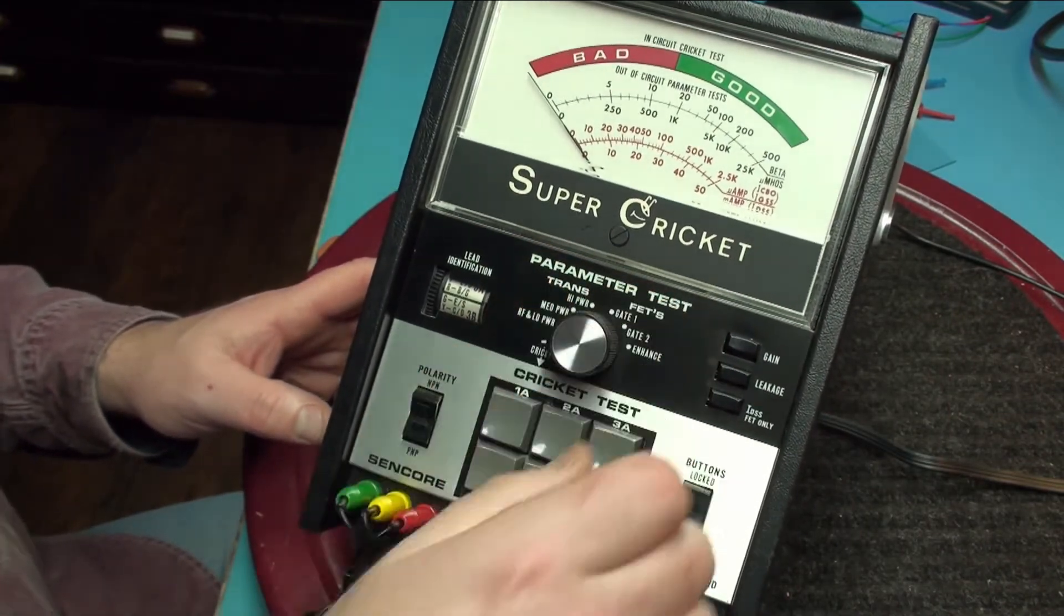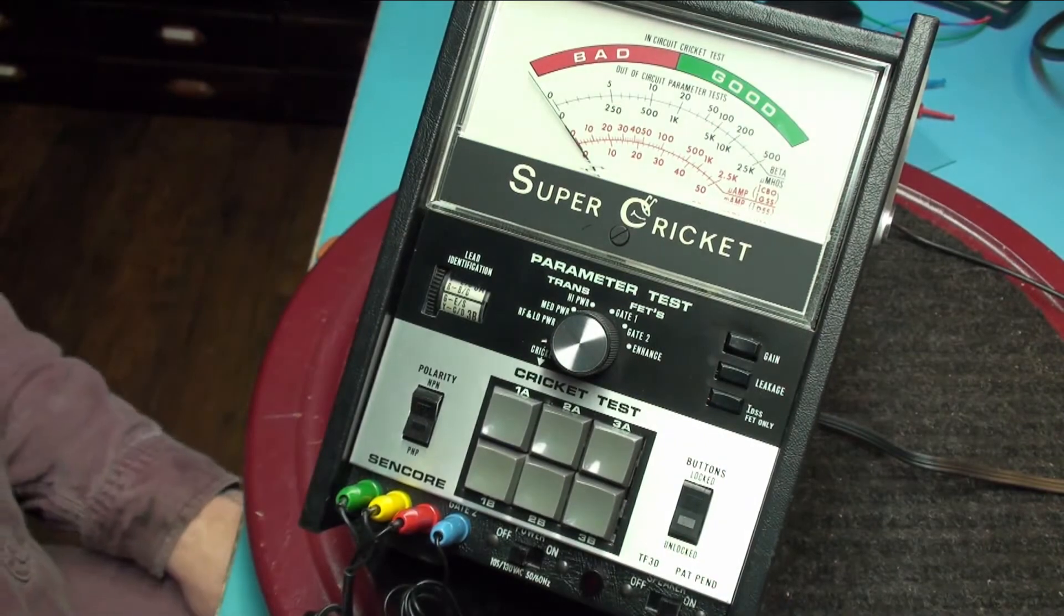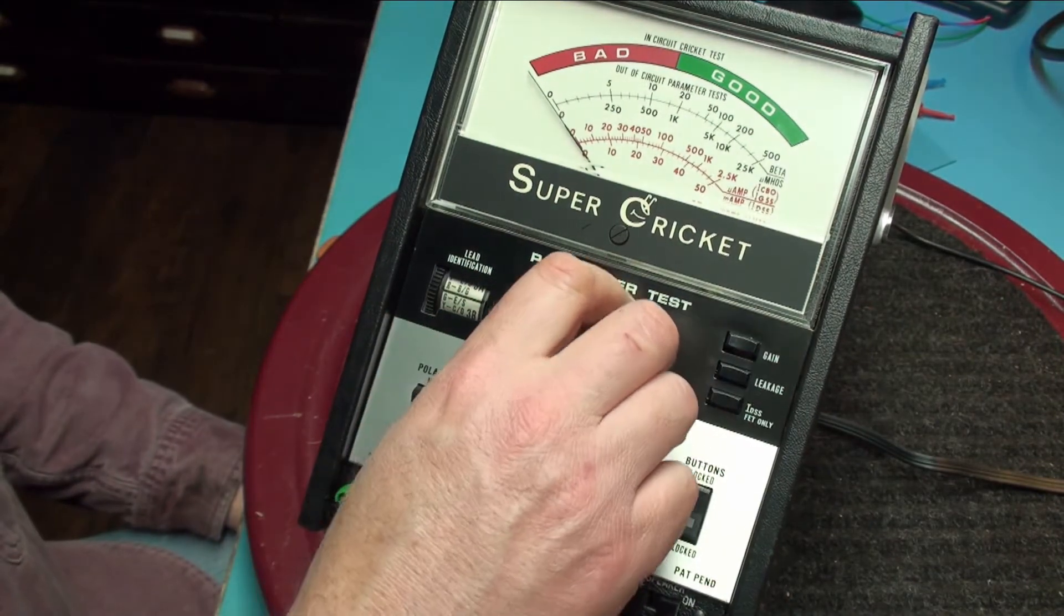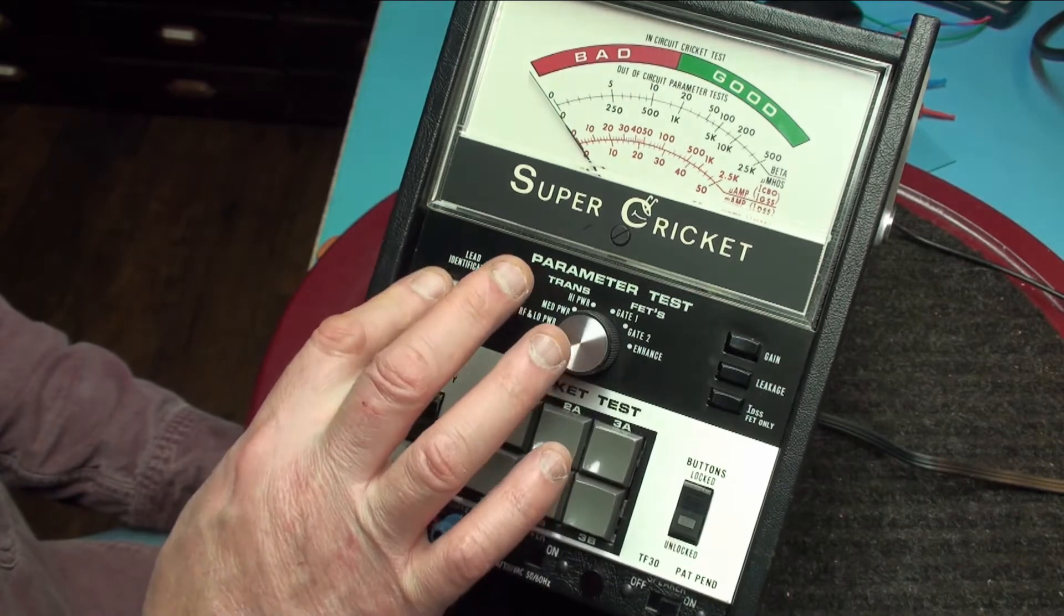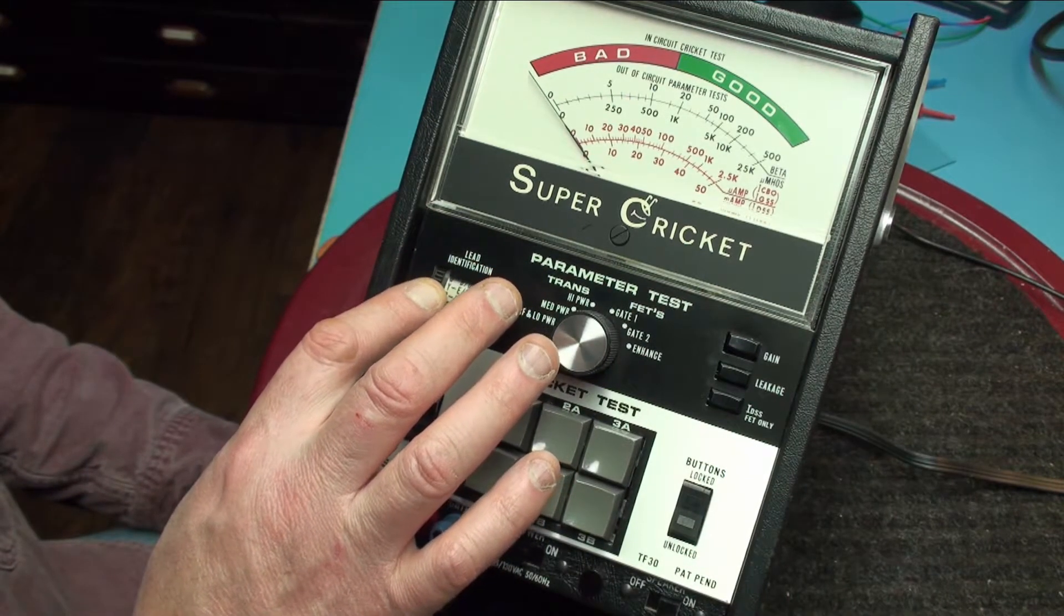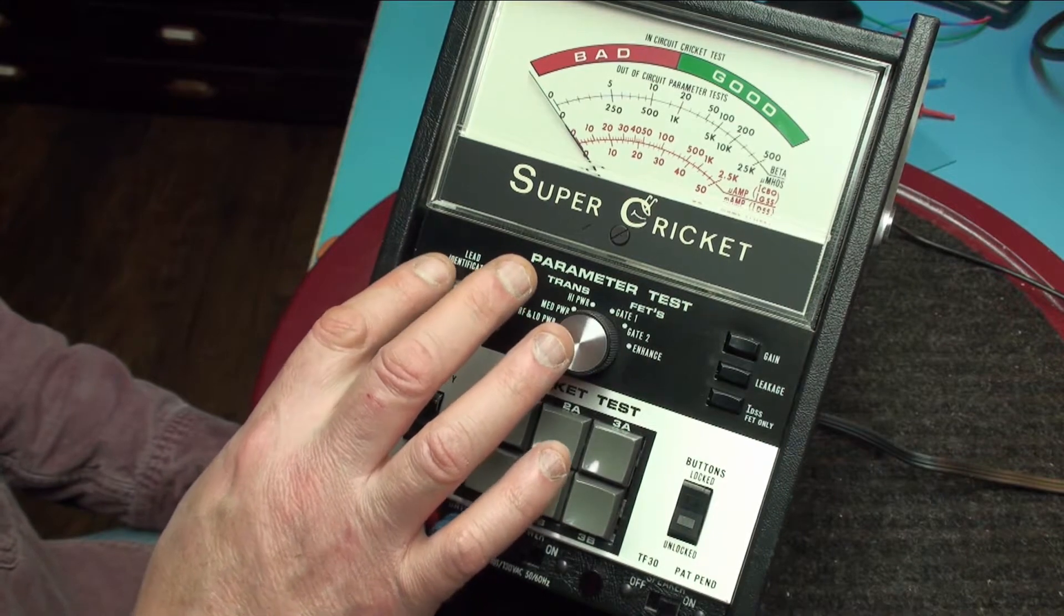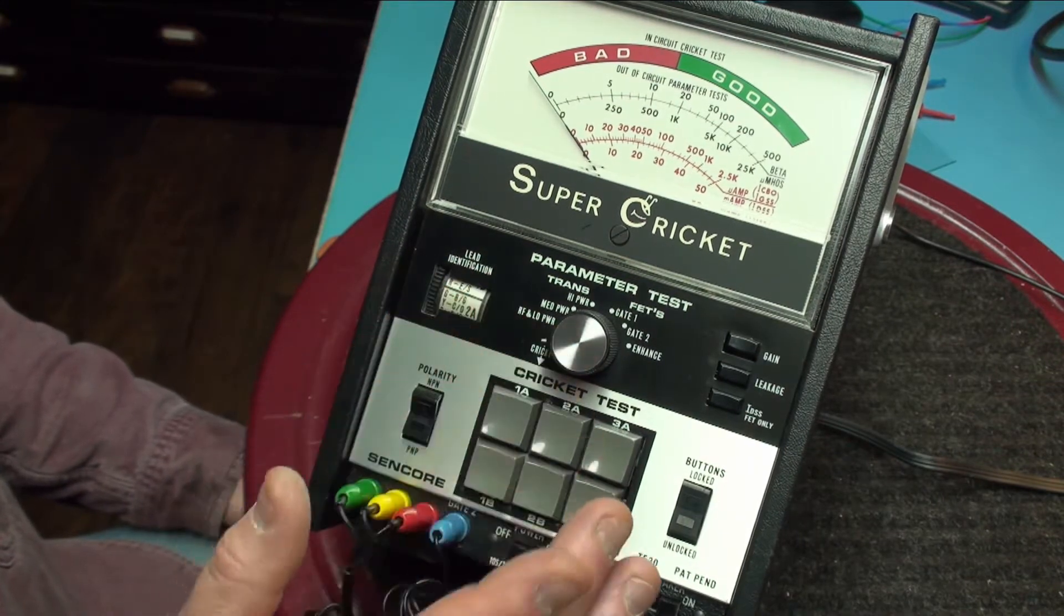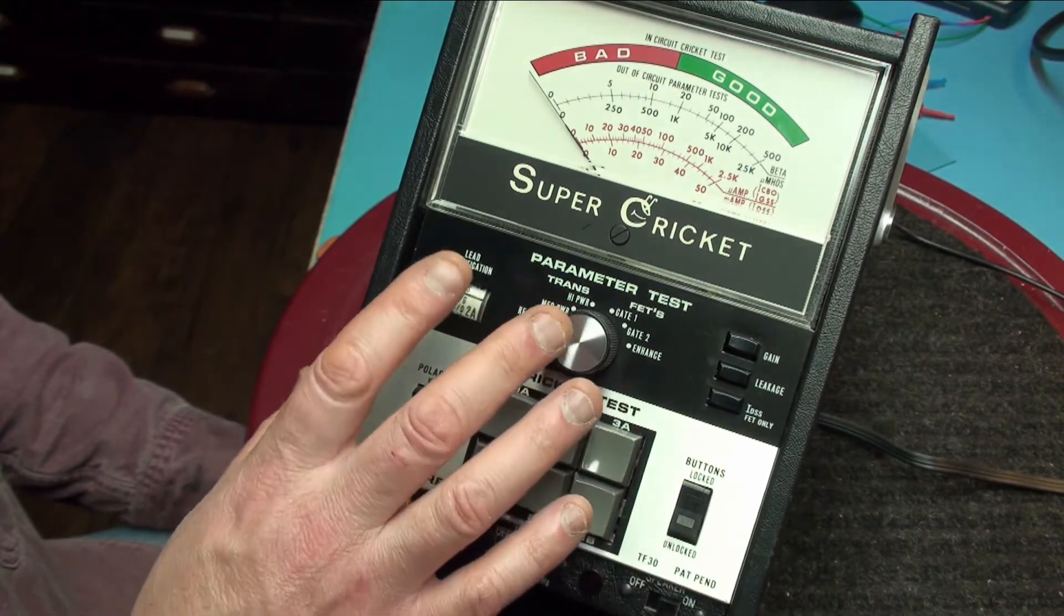All the way to the left is what they call the Cricket test. This is a chart which when I demo how this works we'll see how this chart correlates to what lead identification the transistor has.